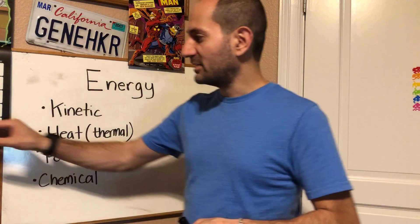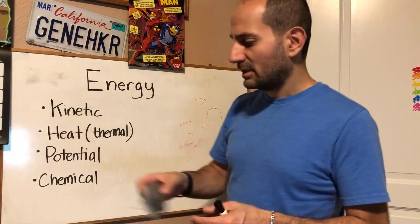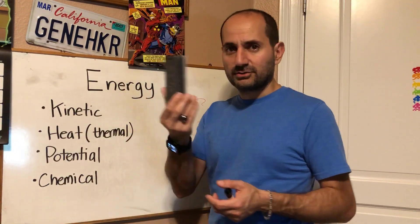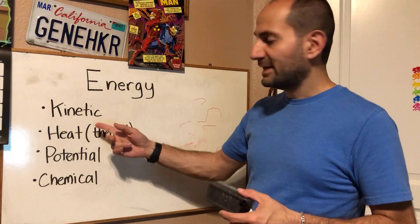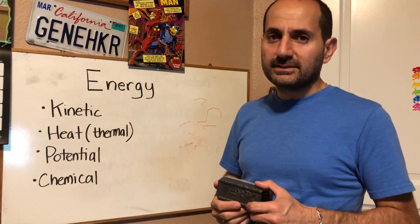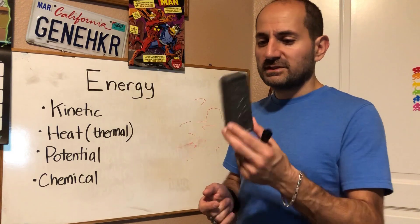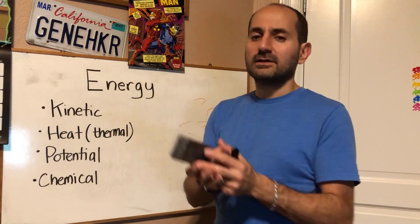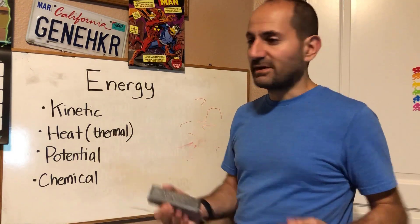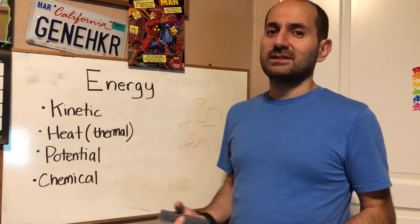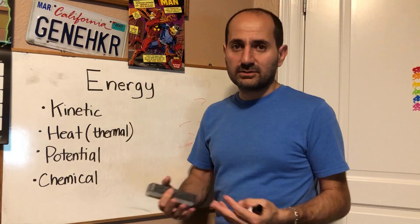There are many different forms. Let me use this eraser as an example. There's kinetic energy. Kinetic energy is the energy of motion, so if this eraser is flying through the air, it has a lot of kinetic energy. If I'm moving about, that's a lot of kinetic energy. Again, it's the energy of motion.